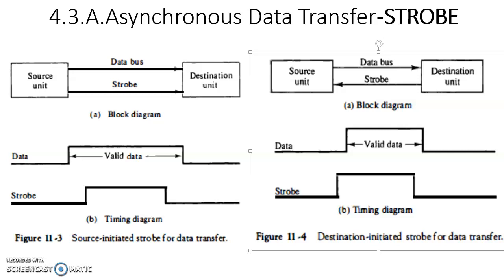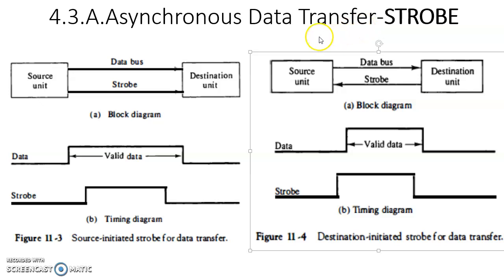In the previous topic we discussed the interface. Now we are going to look at asynchronous data transfer. Data transfer takes place between two entities: a source unit and a destination unit. If both units are using the same clock signal, both are called synchronized and the data transfer is called synchronized data transfer. If both units are not synchronized, then the data transfer between them is called asynchronous data transfer.